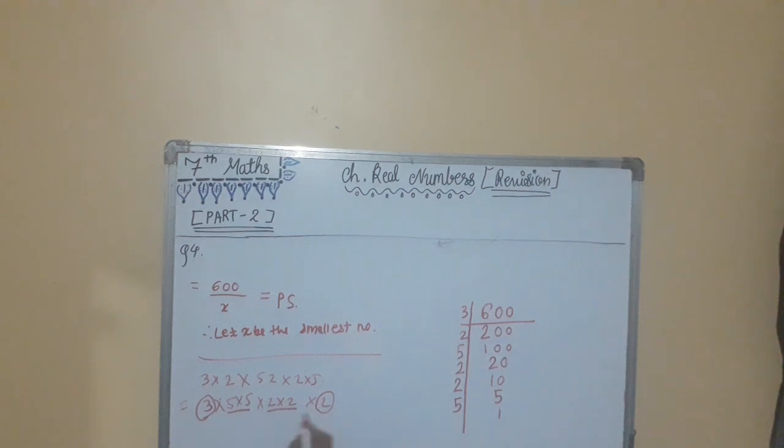This 2. Because of multiplication we multiply them. 3 into 2 equal to 6. Therefore this is the final answer. Answer is the smallest number that should be divided by, so divided by 600 is 6.